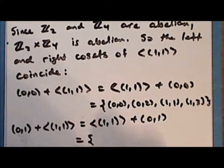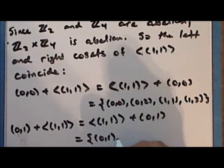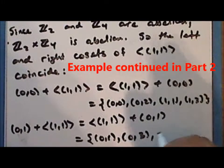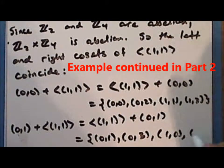The coset containing (0,1) is the set containing the elements (0,1), (0,3), (1,0), and (1,2).